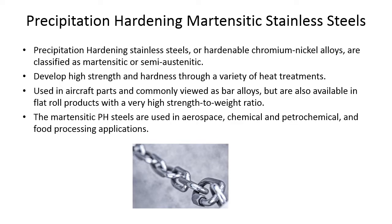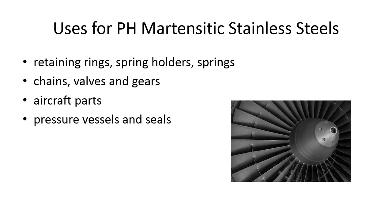Precipitation hardening martensitic stainless steels — or hardenable chromium-nickel alloys — are classified as martensitic or semi-austenitic. They develop high strength and hardness through a variety of heat treatments. Used in aircraft parts and commonly viewed as bar alloys, but also available in flat roll products with very high strength-to-weight ratios. They are used in aerospace, chemical, petrochemical, and food processing applications. Specific uses include retaining rings, spring holders, springs, chains, valves, gears, aircraft parts, pressure vessels, and seals.